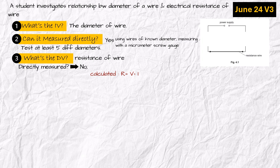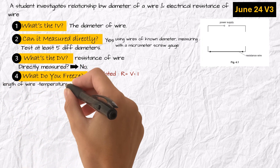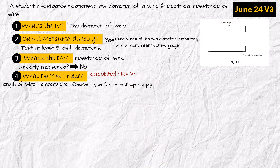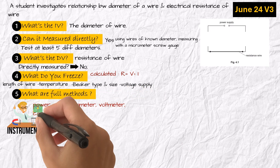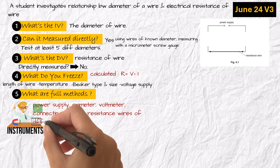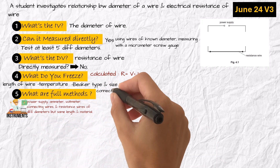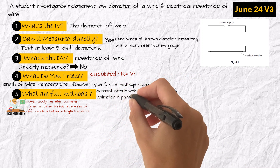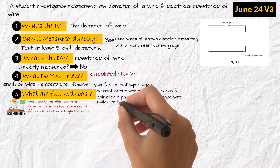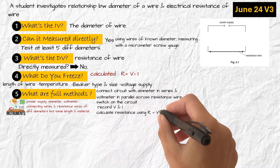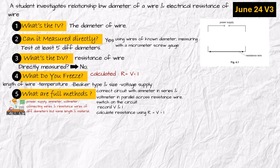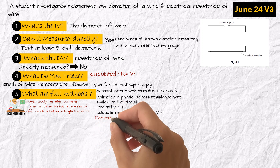Number four: what do you freeze? Write any two from the following: length of the wire, material of the wire, temperature, and voltage supply. Number five: what's the full method, including instruments? To carry out the experiment, I will use a power supply, an ammeter, a voltmeter, connecting wires, and resistance wires of different diameters but the same length and material. I will connect the circuit with the ammeter in series and the voltmeter in parallel across the resistance wire. I will switch on the circuit, record the voltage and current, and calculate resistance using R = V ÷ I. I will test at least five different wire diameters. For each diameter, I will take three readings and calculate the average resistance.